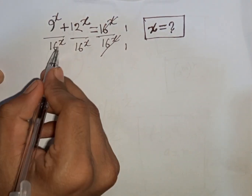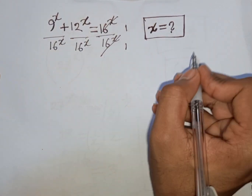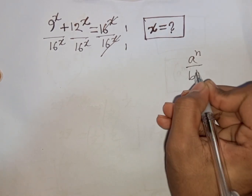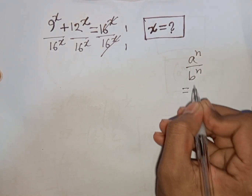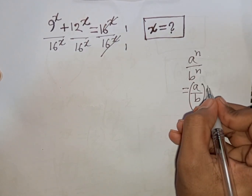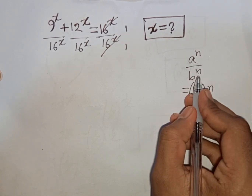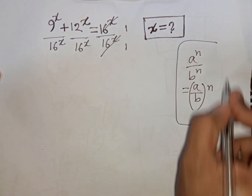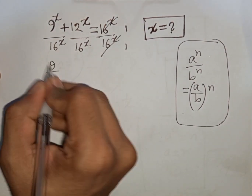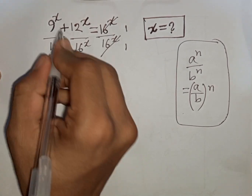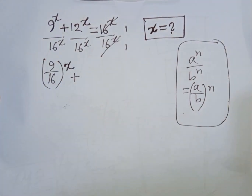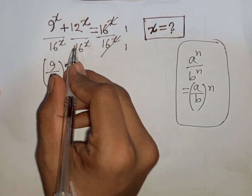We see the same power x but different bases. Remember this exponential rule: a^n over b^n equals (a/b)^n. So we can write 9/16 raised to the power x, then plus, we apply the same formula again.